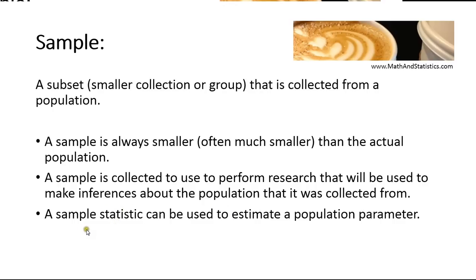The word statistic is often associated with the word sample, and you'll often see the word parameter associated with the word population. When you have a population of interest, such as all female adults, a population parameter might be the mean height of all female adults. A parameter always describes the entire population. The mean height for the entire population would be very difficult to discover because we're not going to measure every single female adult in the world. But we can estimate that population parameter by collecting a sample and calculating a sample statistic. The word statistic always describes a measure gathered from a sample, such as a sample mean or sample variance. Sample statistics are very often used to estimate population parameters.